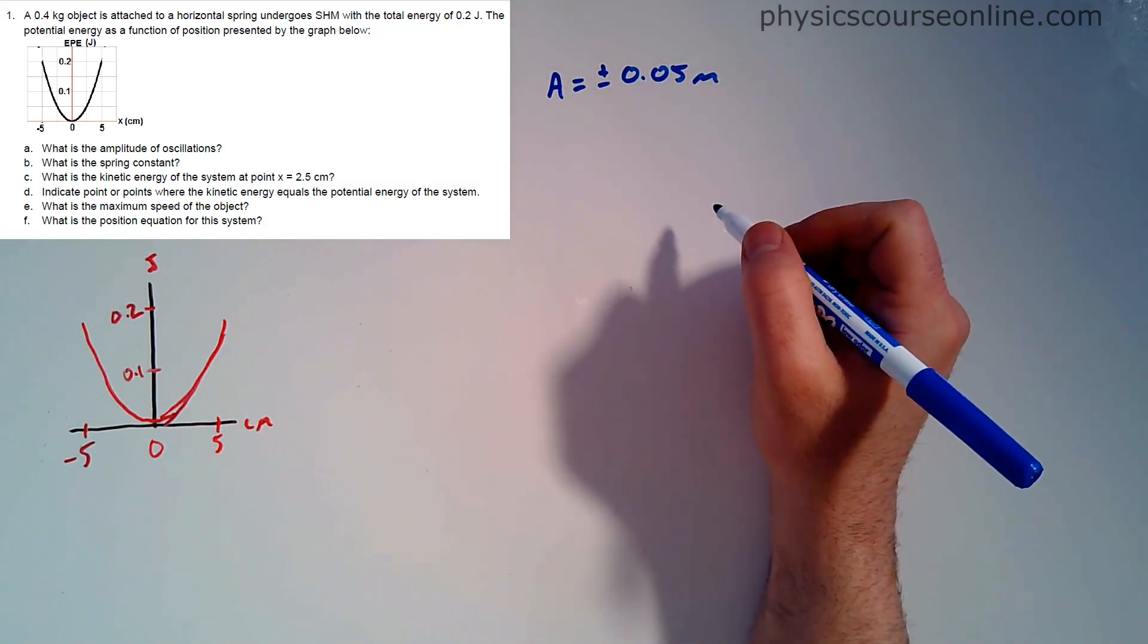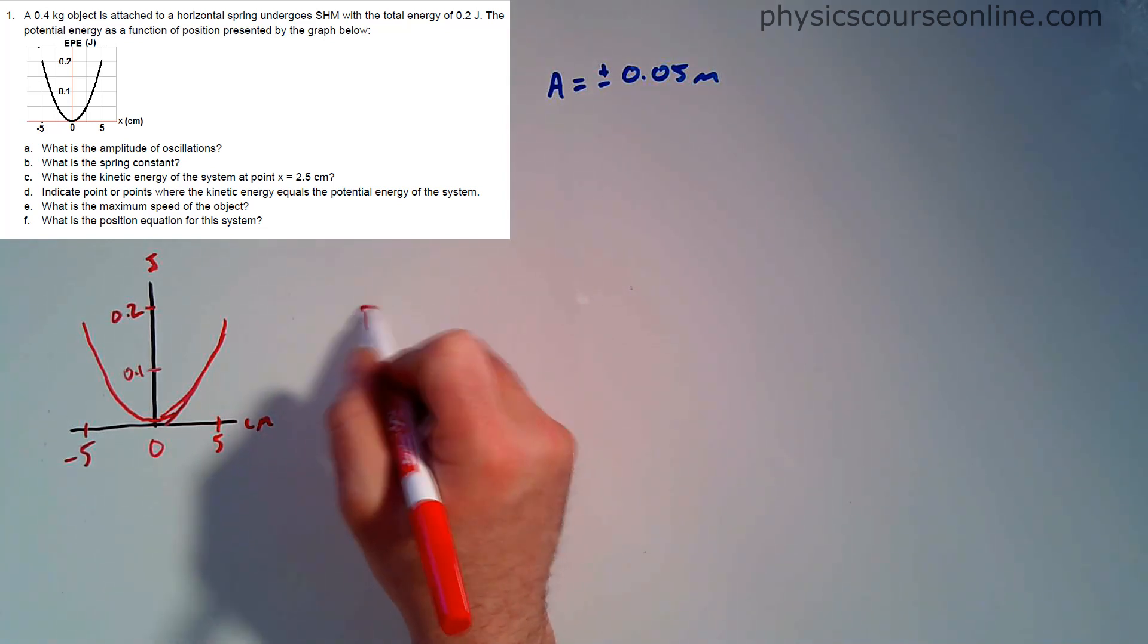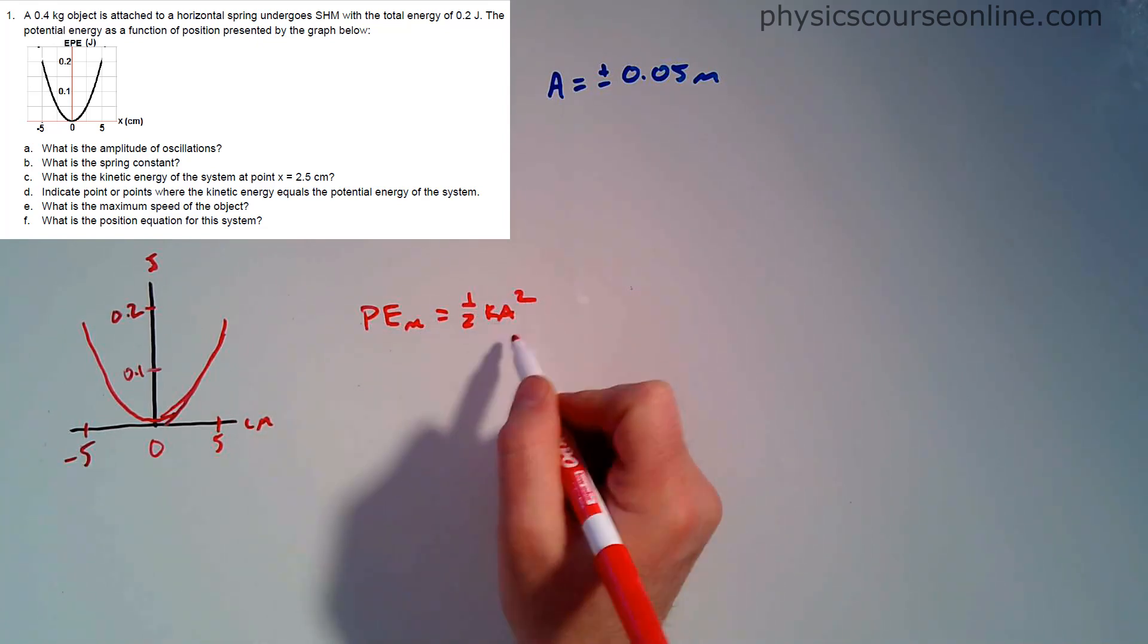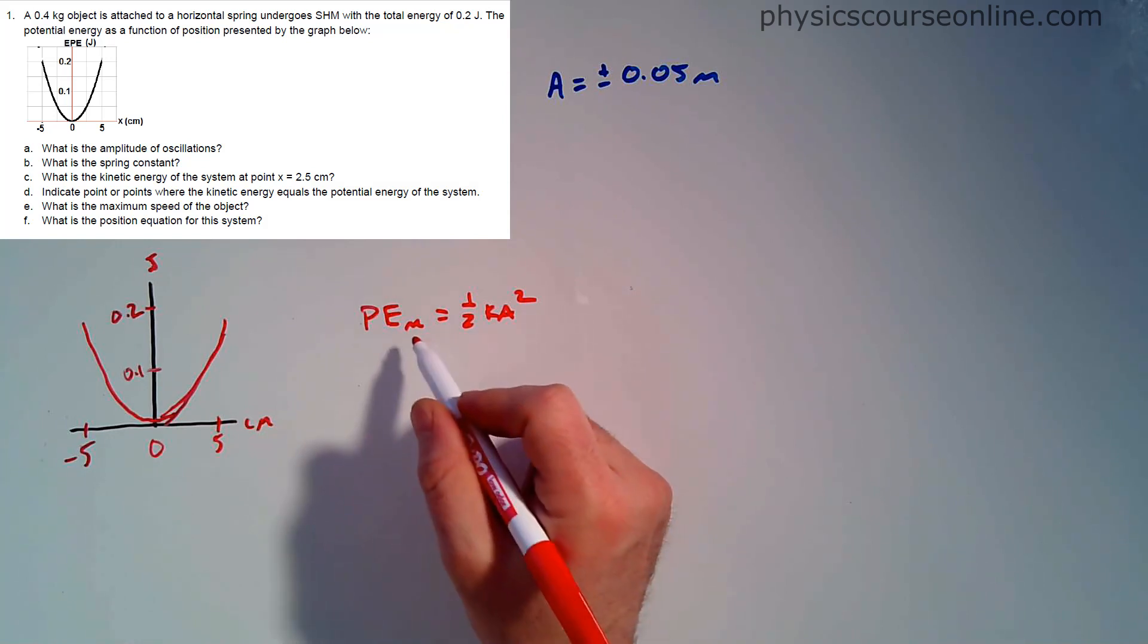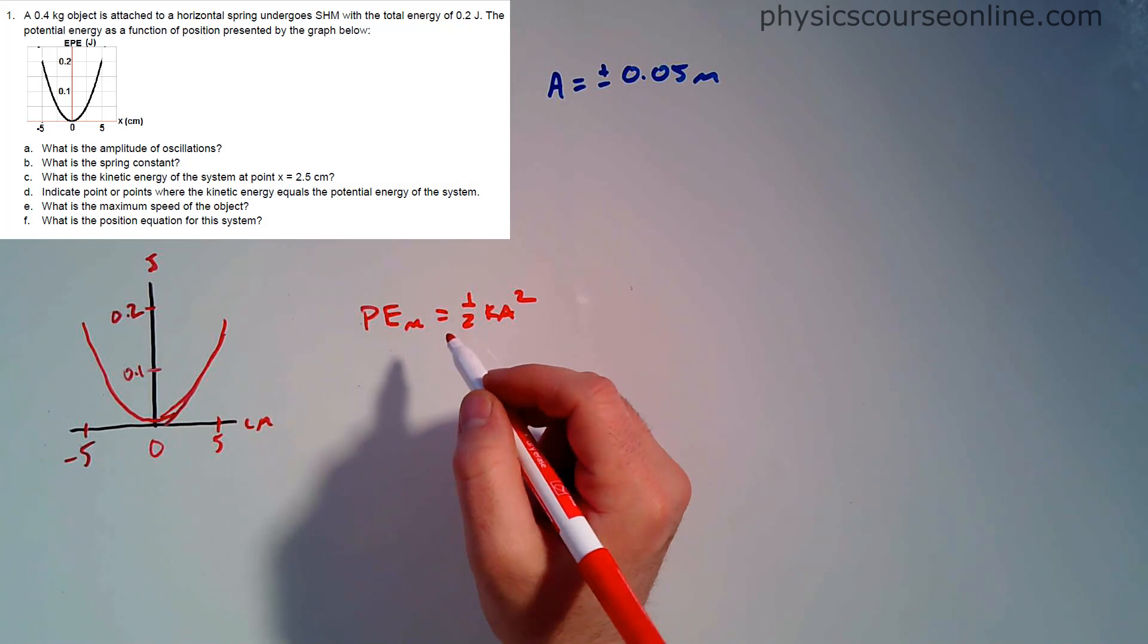Part B, what is the spring constant? This one we're going to have to toss in some math now because we can't get that from the chart. We got to remember that the maximum potential energy of a system is going to be equal to one-half kA squared. We know the energy of the system and we know the amplitude.